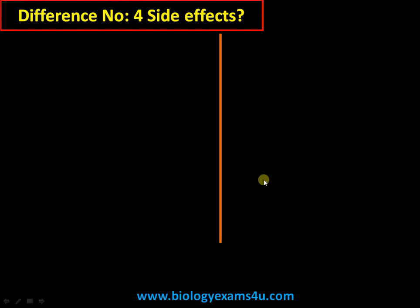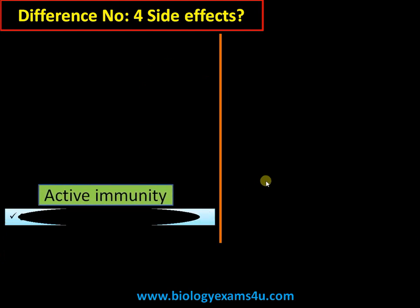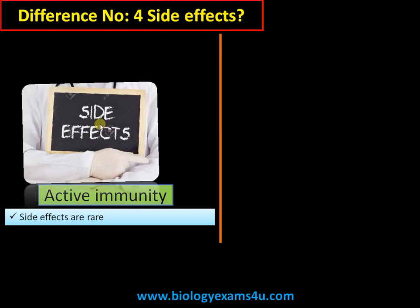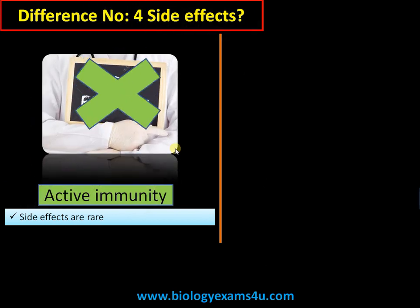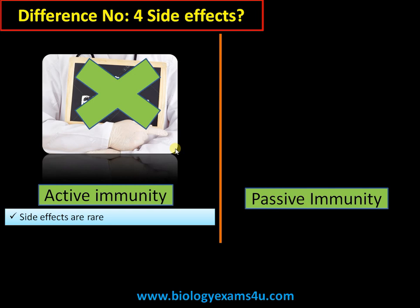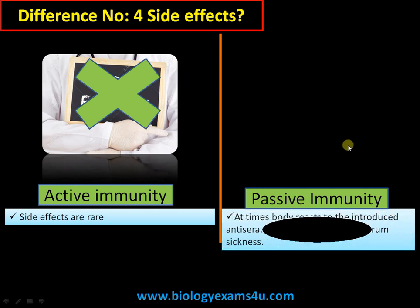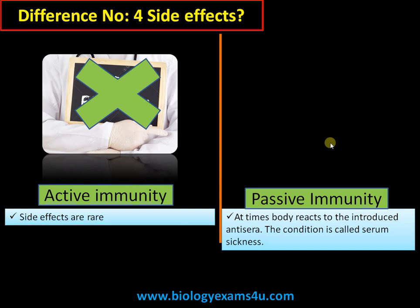Difference number four is regarding side effects. Active immunity is a natural process, therefore side effects are very rare. Whereas in the case of passive immunity, we are injecting pre-made antibodies into the system, and sometimes the body may react. This condition is called serum sickness.